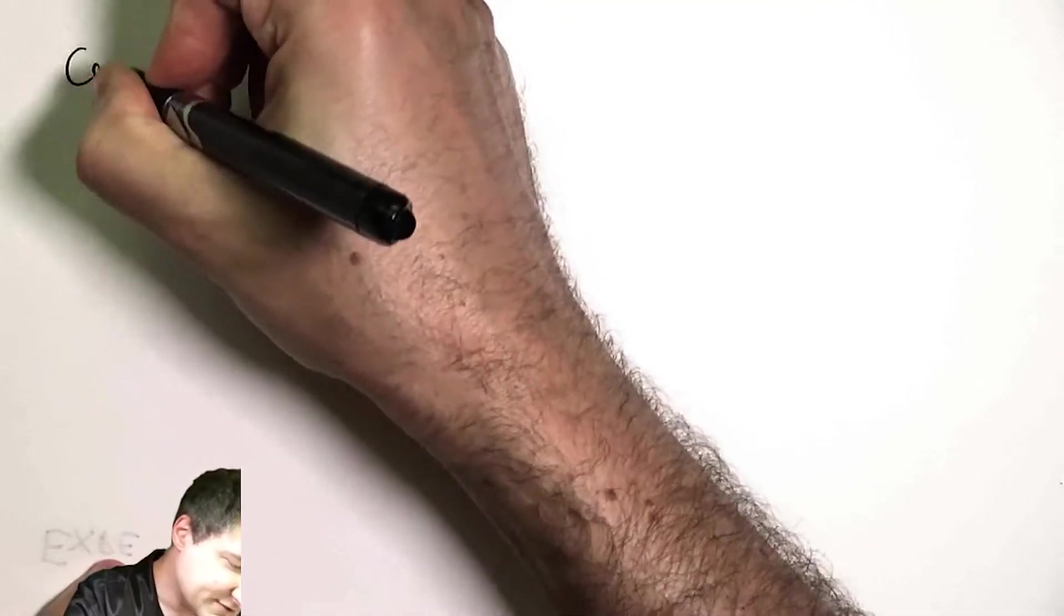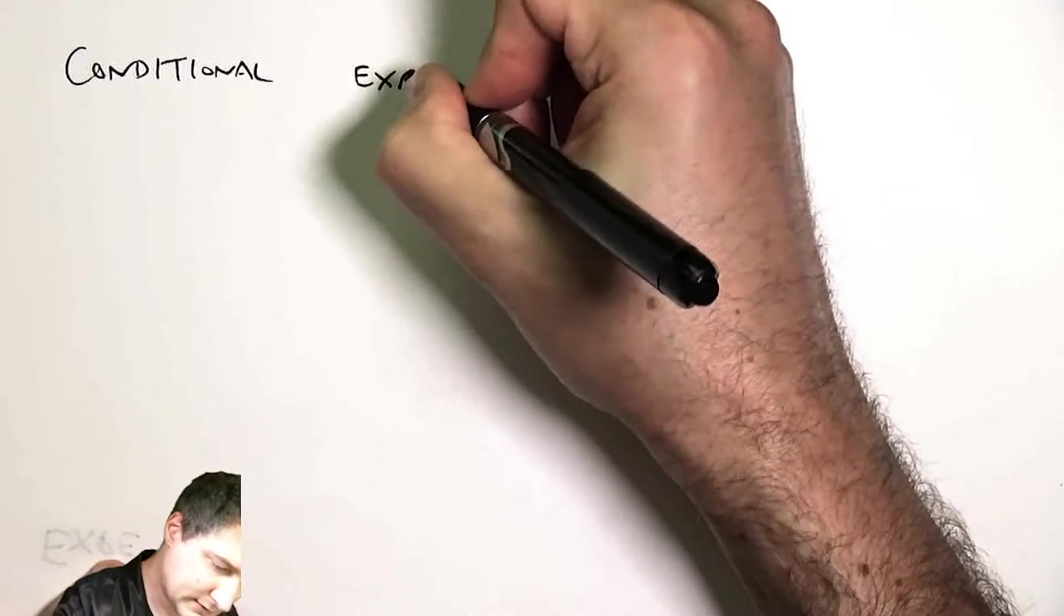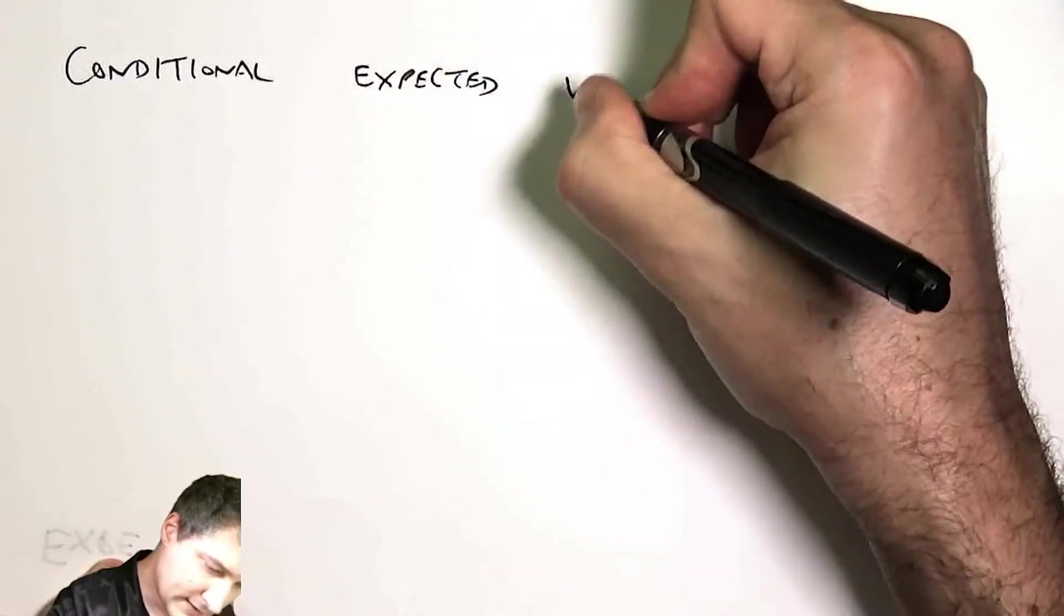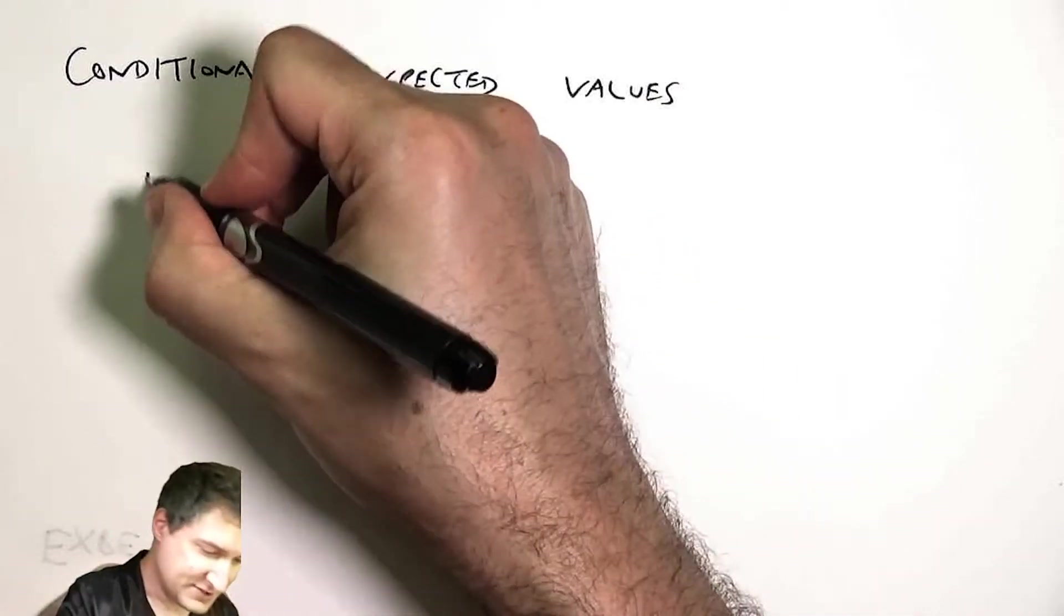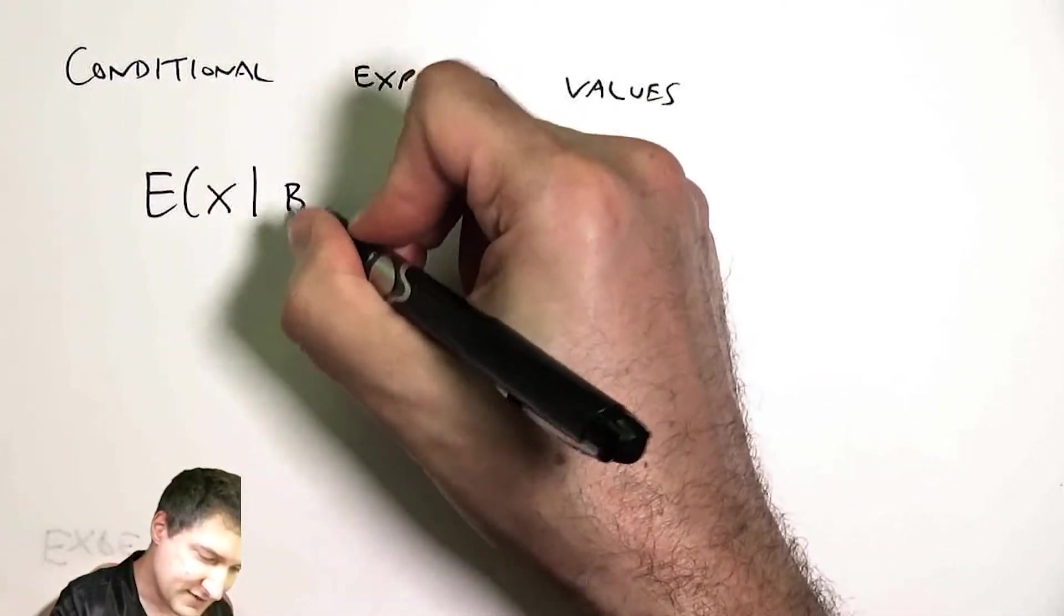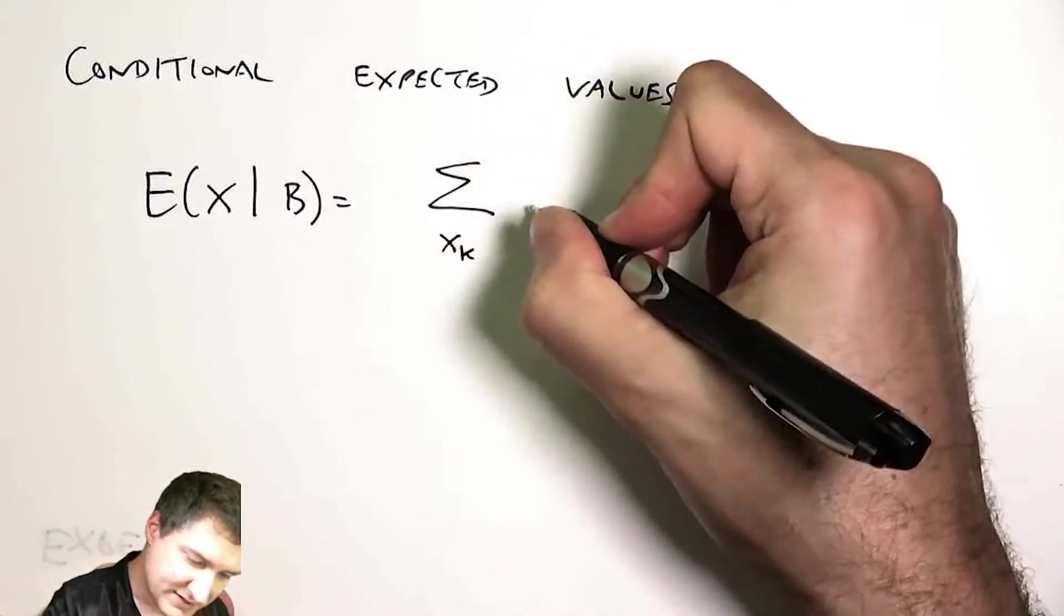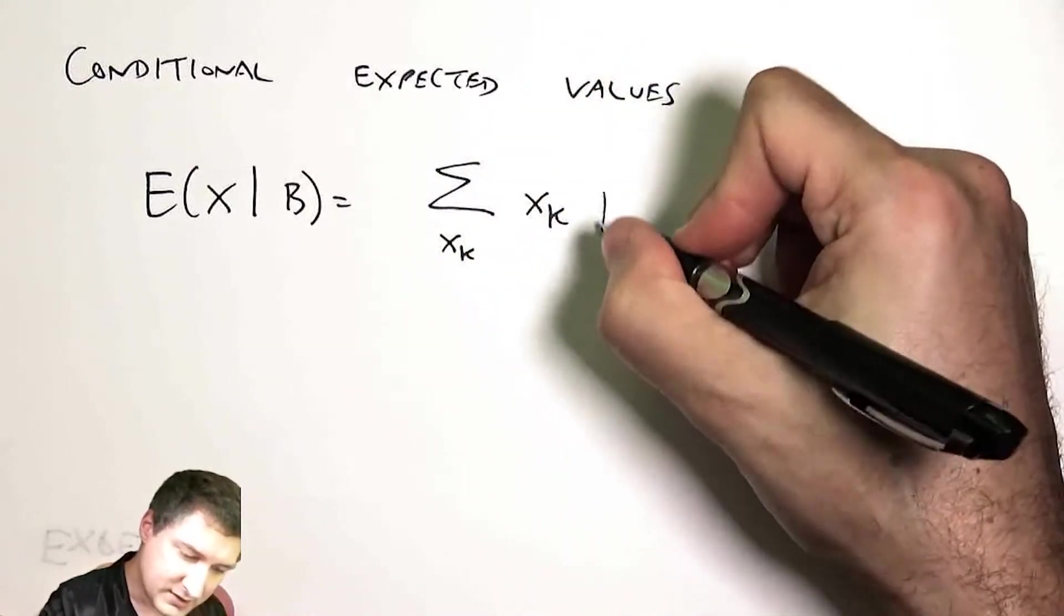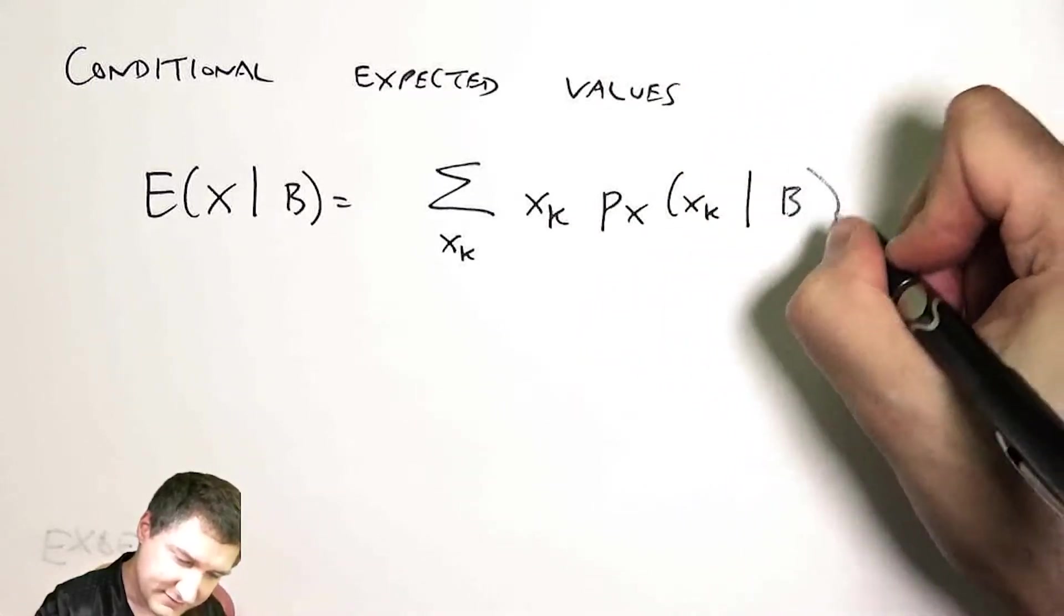Okay, so we talked about conditional PMFs, and the natural thing to do is to talk about what is the expected value of that kind of PMF. So this is going to be conditional expected values, which is about as you'd expect. The expected value of x given some event is just the sum over all of the possible outcomes weighted by the probability of getting that outcome conditioned on the event.